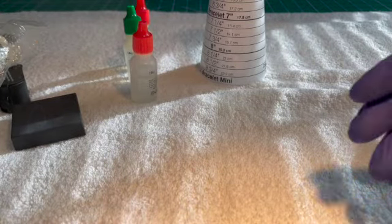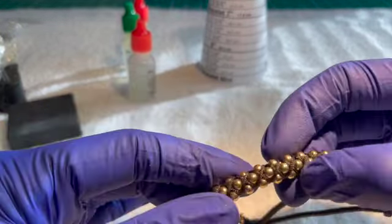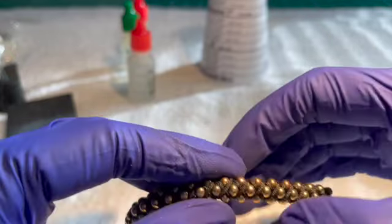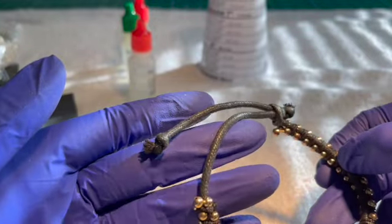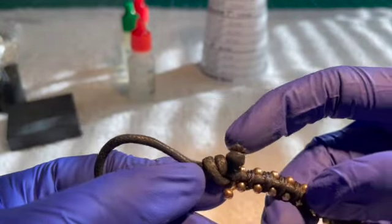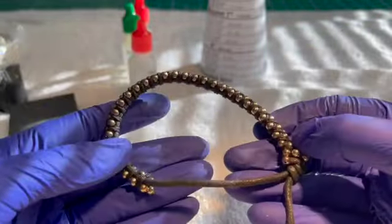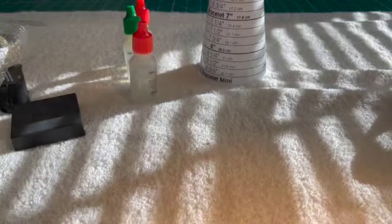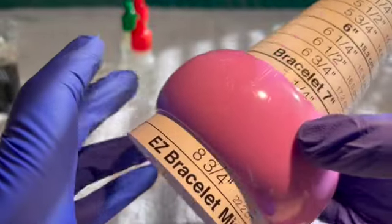We have this corded bracelet with little gold beads. All the beads are there, the cord's in great shape. Maybe a little bit of fray on the end of the knots that could be trimmed back. Two dollars if anybody wants that one. We have a pink plastic bracelet, size eight, one dollar for that one.